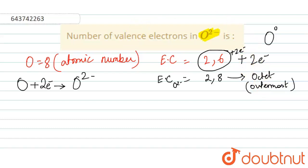Therefore, it is asked that you have to write the number of valence electrons. That means, the number of electrons present in the outermost shell is known as valence electrons.